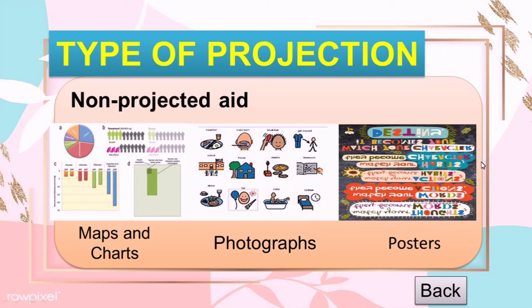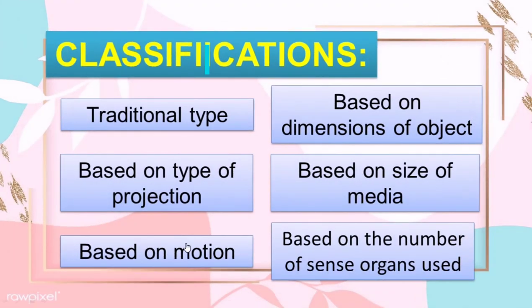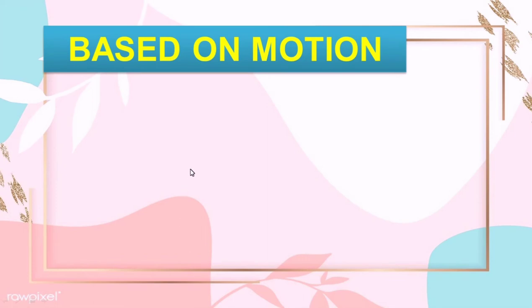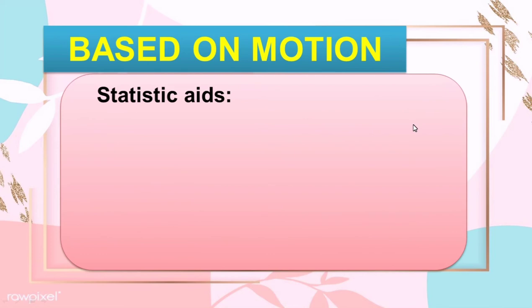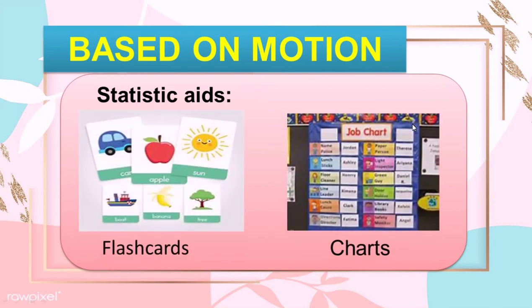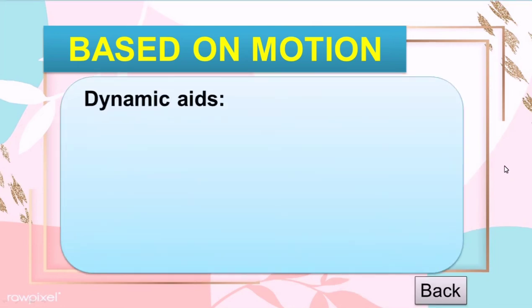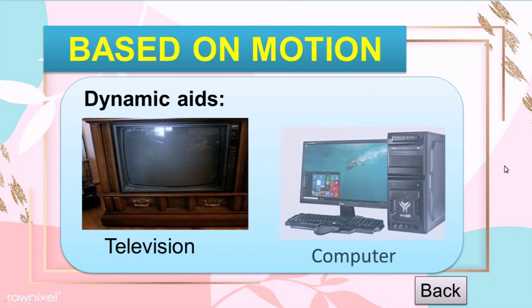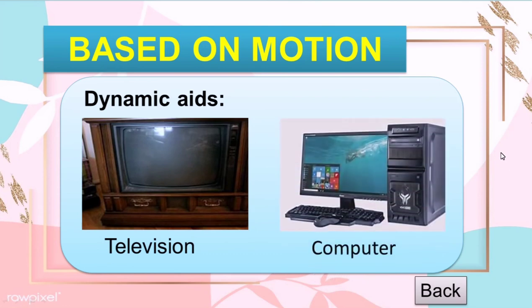The third classification is based on motion. There are two types. The first one is the static aids, like flashcards and charts — these are aids used in classroom teaching which do not move. The second one is the dynamic aids, like televisions and computers — these are aids in which visuals or parts are capable of being made to move by mechanical principles.